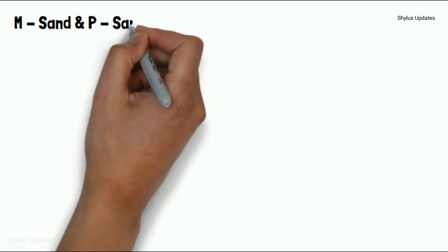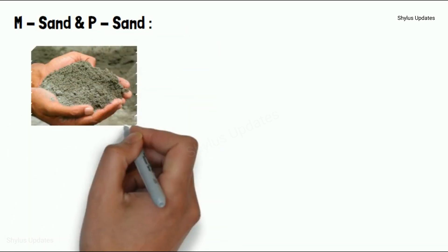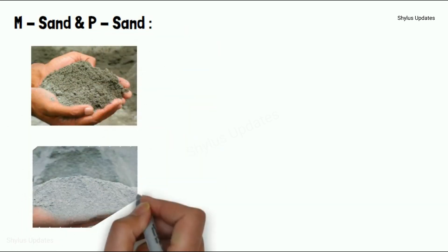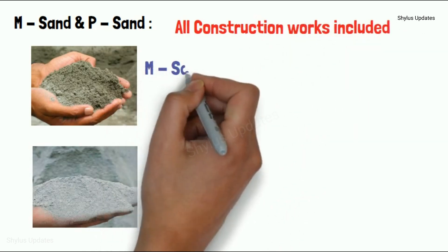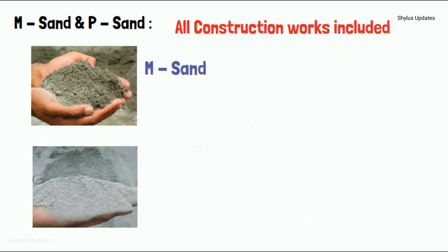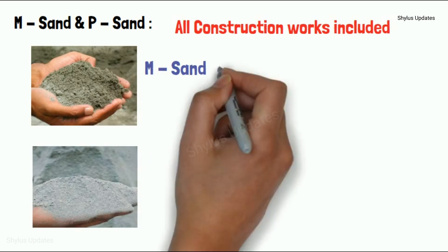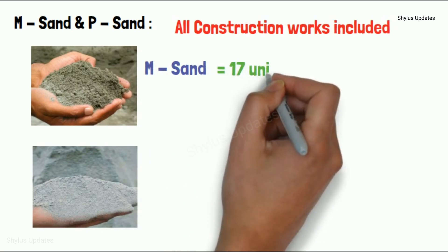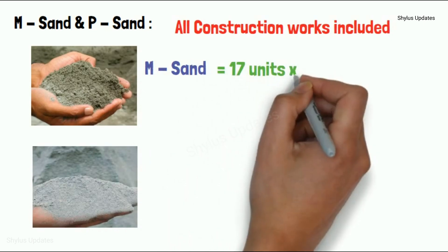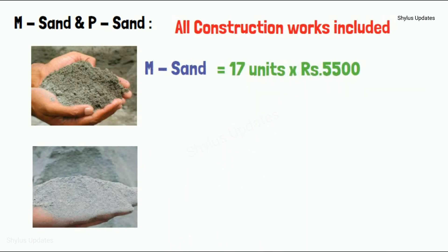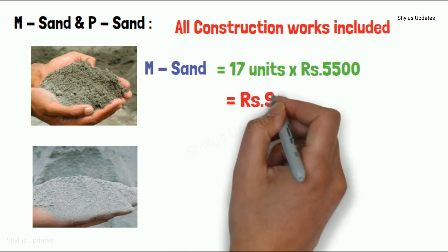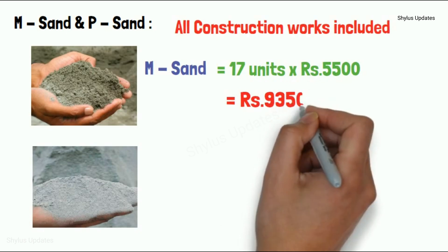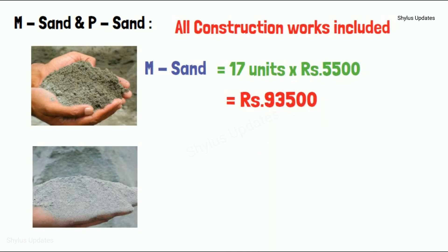M-Sand is used in all construction works. For an 850 square feet house, 17 units of M-Sand is required. The current market rate of M-Sand is Rs. 5,500. So when you multiply 17 units into Rs. 5,500, you get Rs. 93,500.